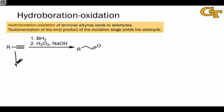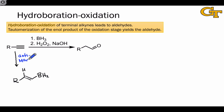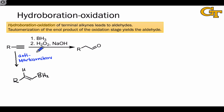Hydroboration of a terminal alkyne leads to an alkenyl borane in which H is attached to the more substituted position and boron to the less substituted position. This addition happens with anti-Markovnikov selectivity for the same reason it does in an alkene context. The hydrogen in BH3 is partially negative, and so it prefers to bond to the more substituted position as the nucleophilic component of BH3.